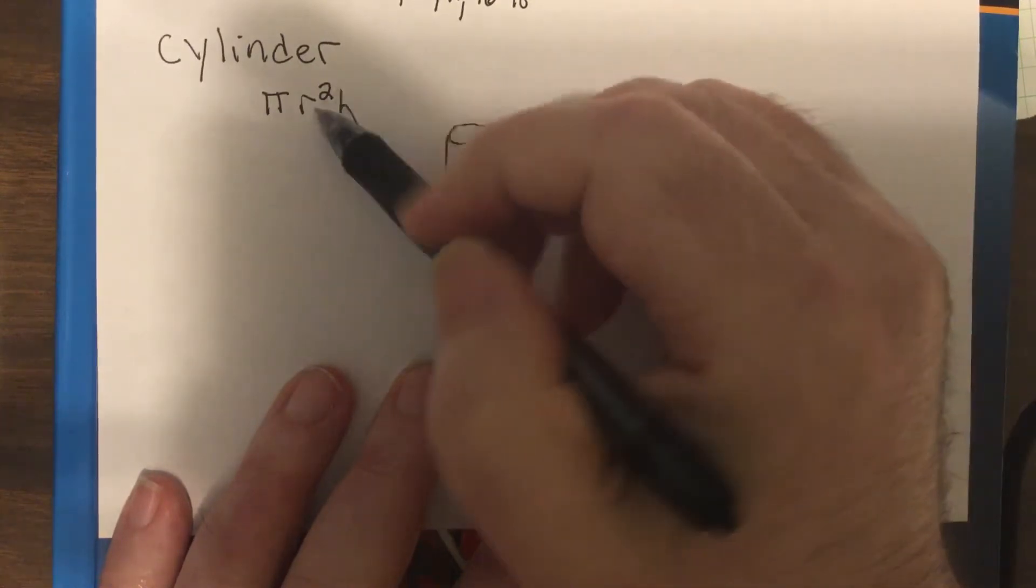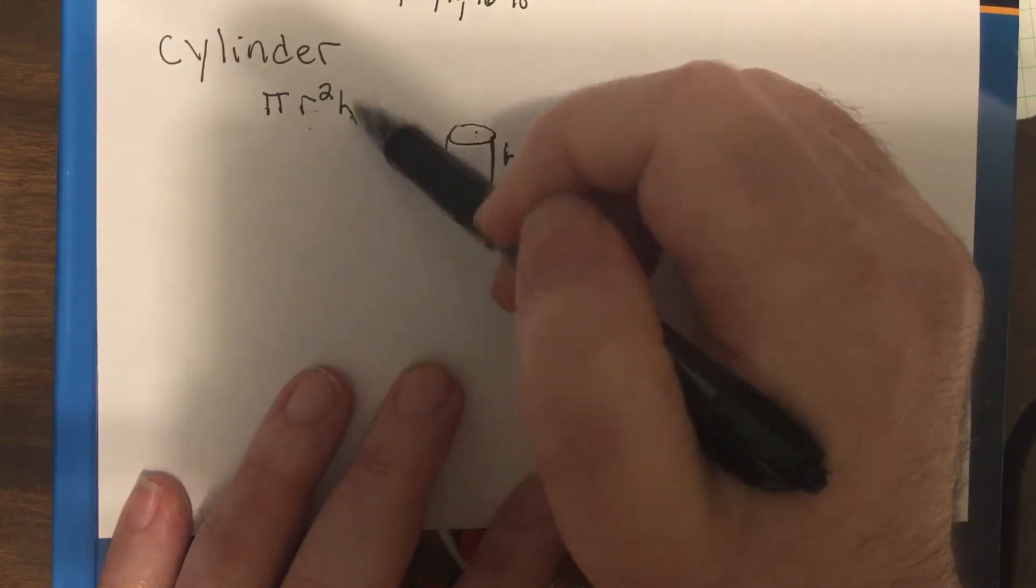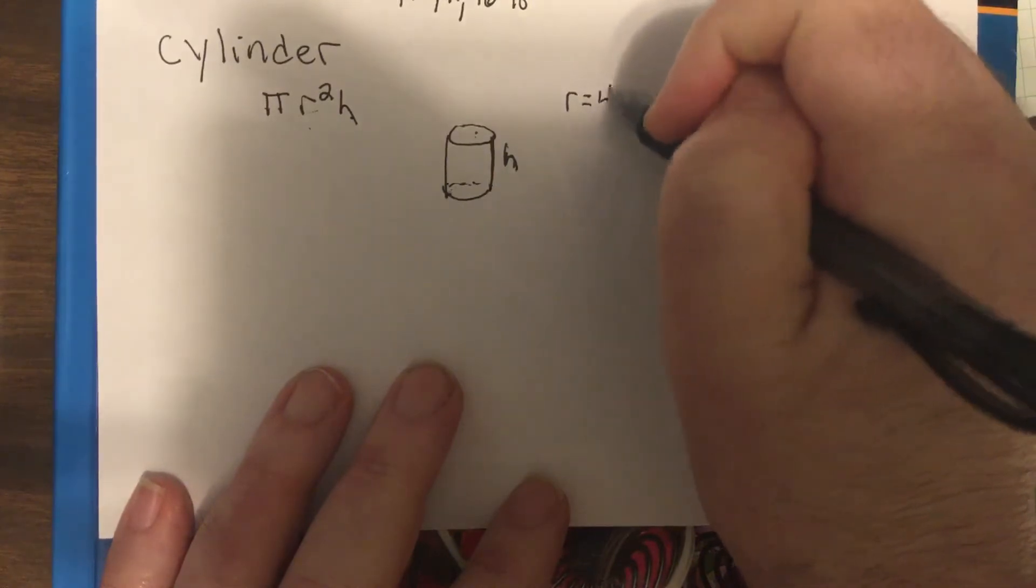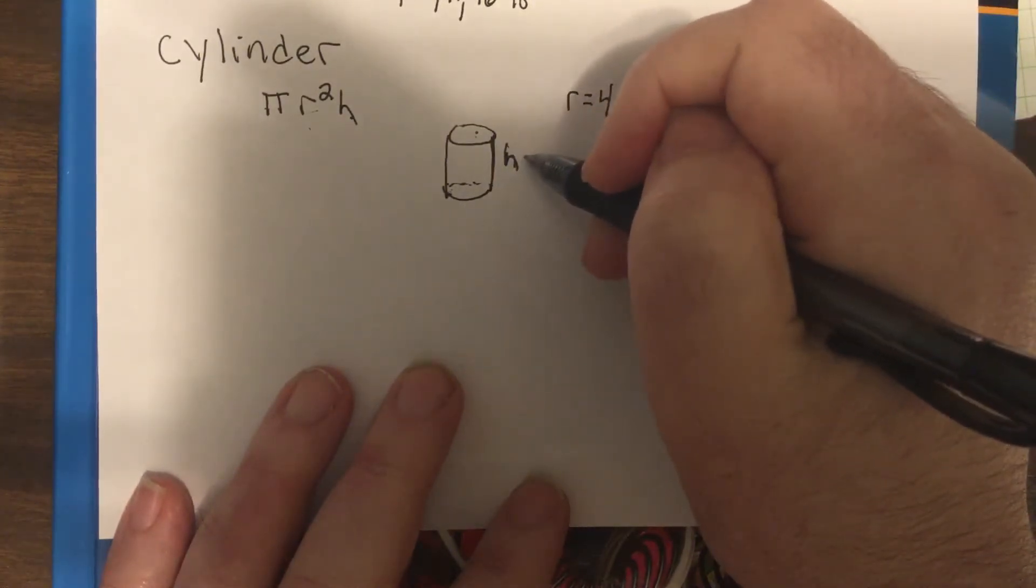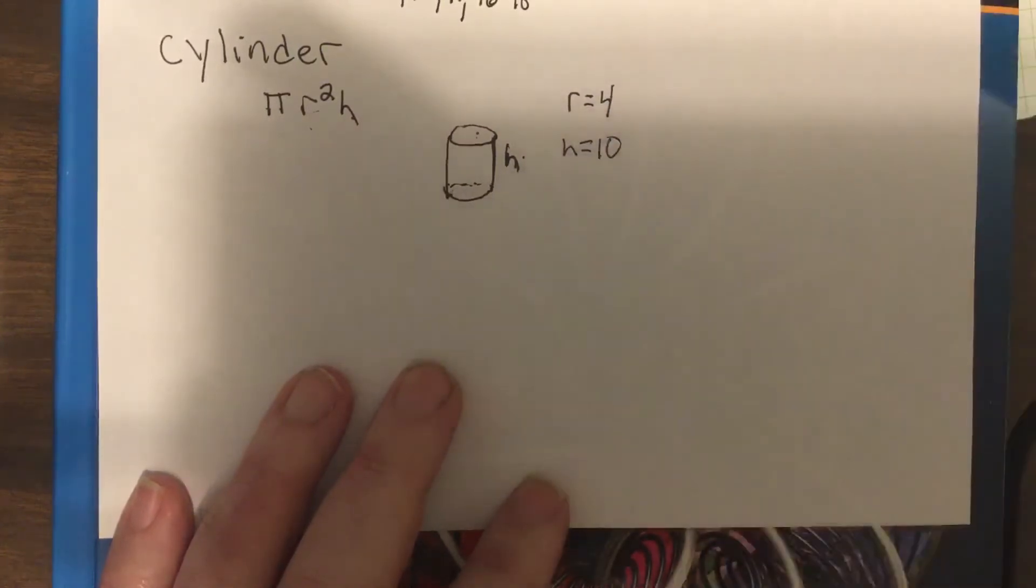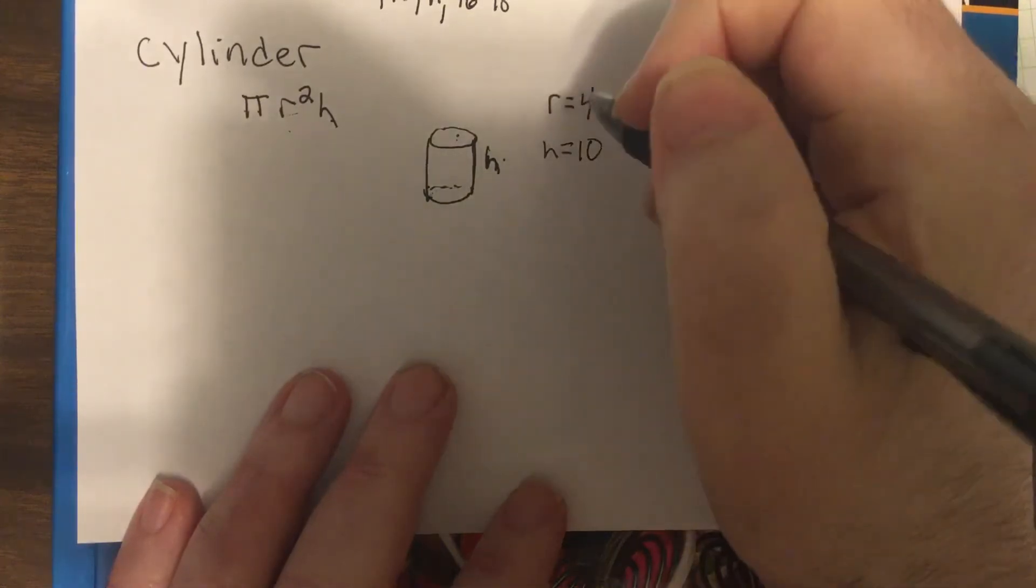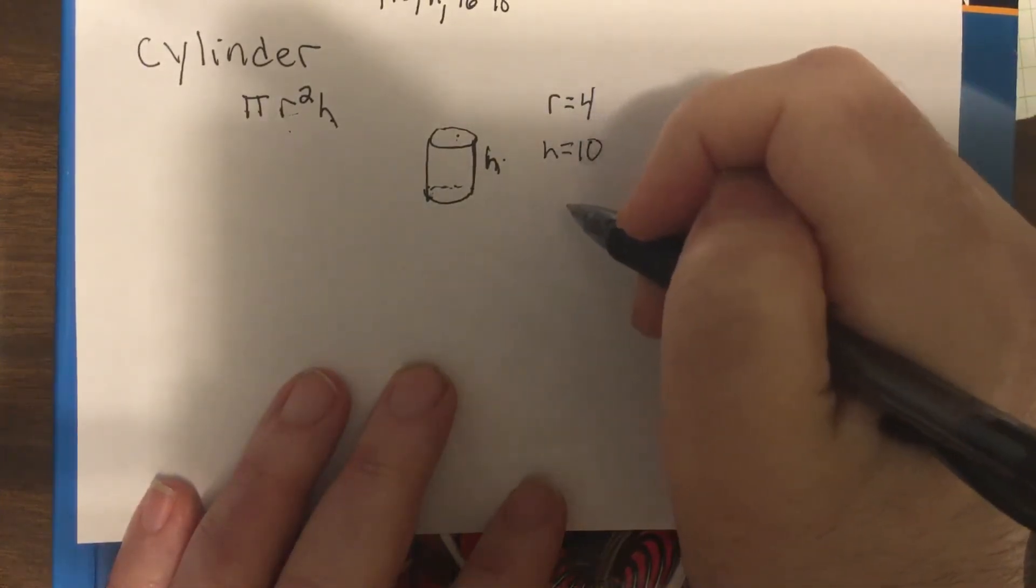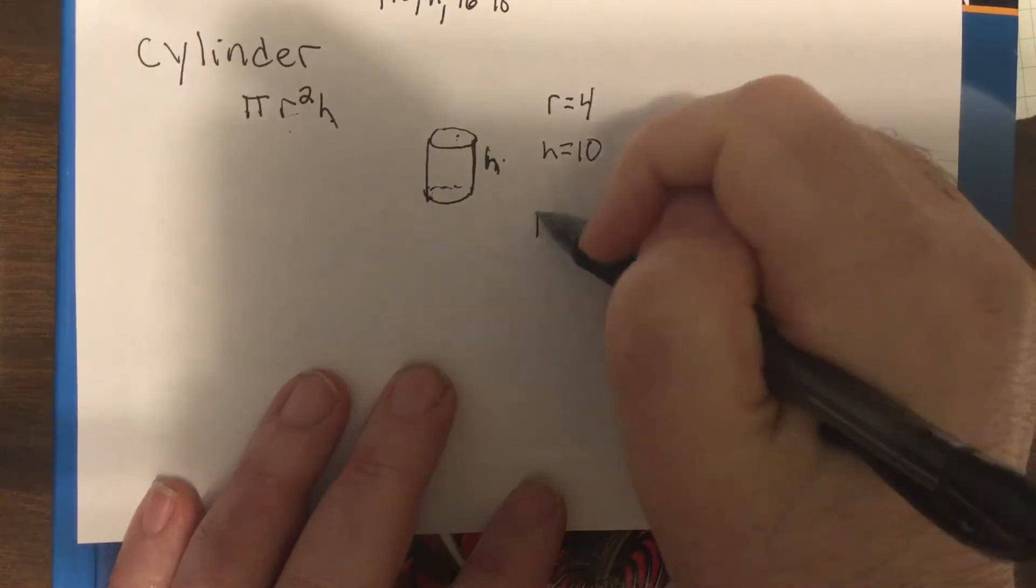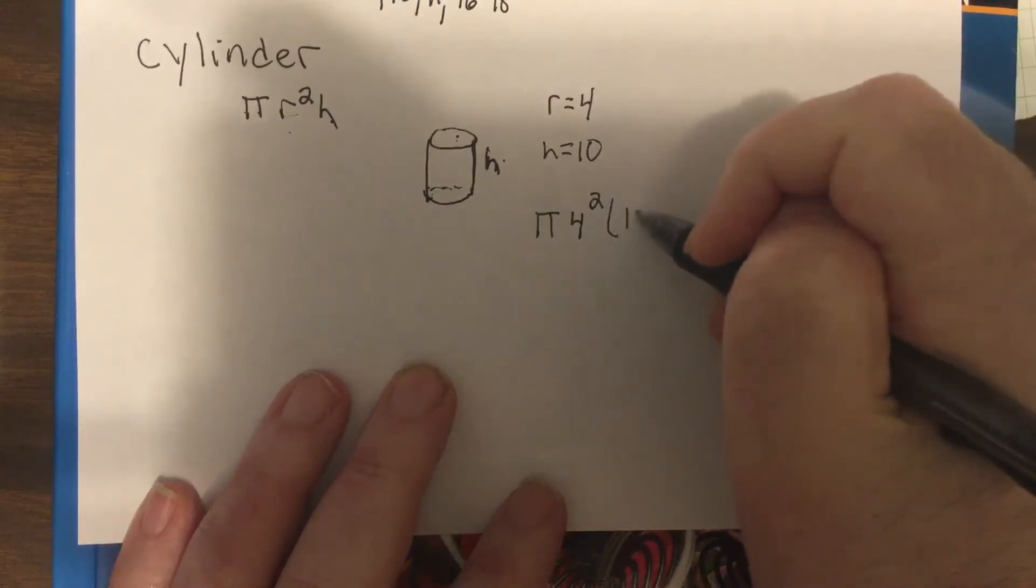So the volume is just pi r squared times the height. So if I tell you that the radius is four and the height is ten, what is the volume of that? Well, it would be pi times the radius squared times the height.